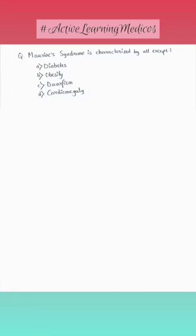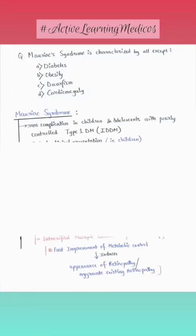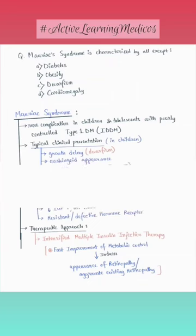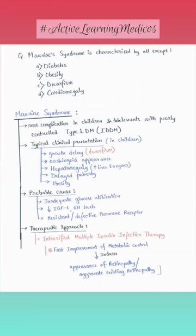Today in Active Learning Medicos we are going to learn about Mauriac syndrome. It is a rare complication in children and adolescents with poorly controlled type 1 diabetes, also known as IDDM — insulin dependent diabetes mellitus.